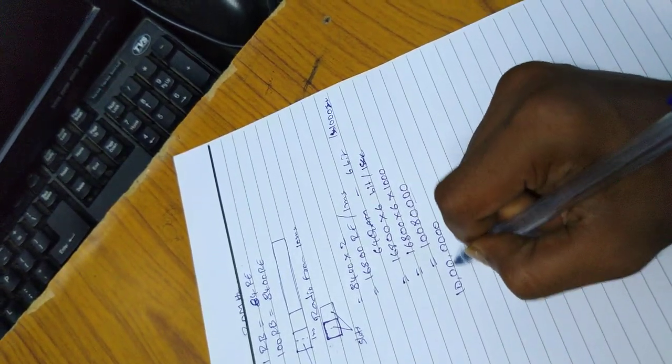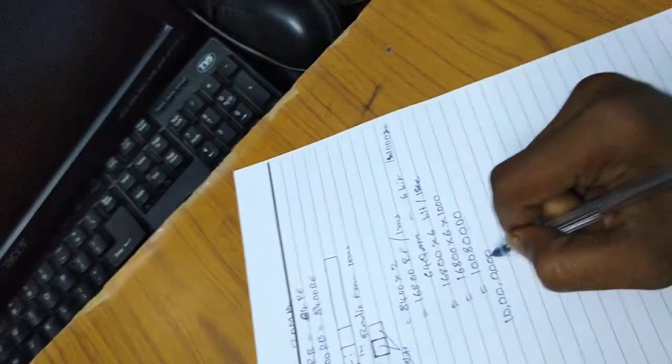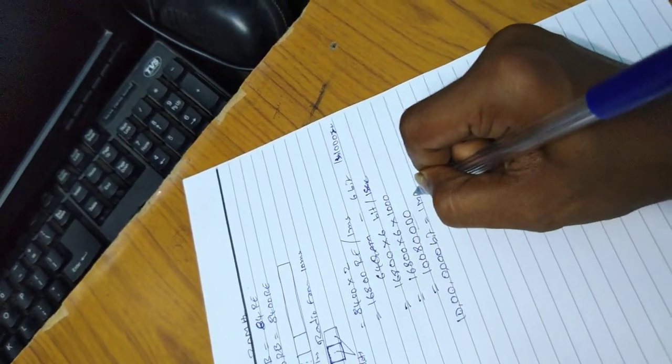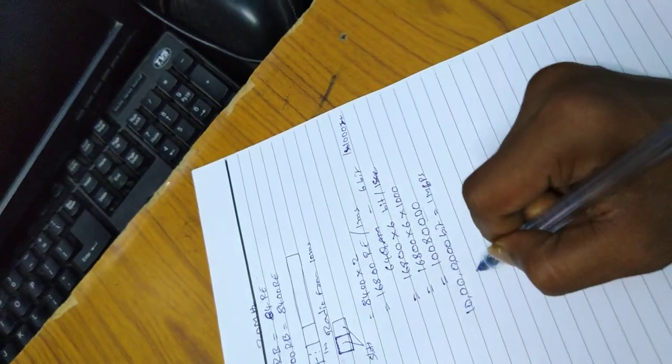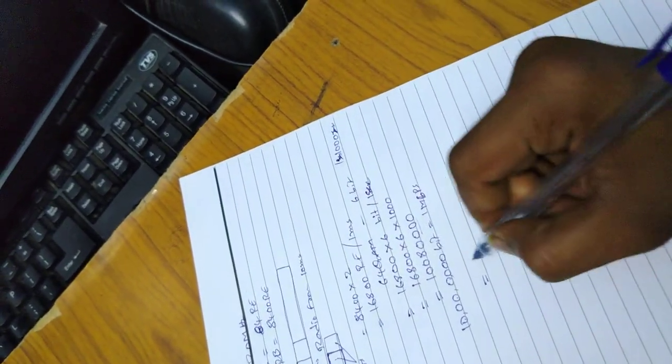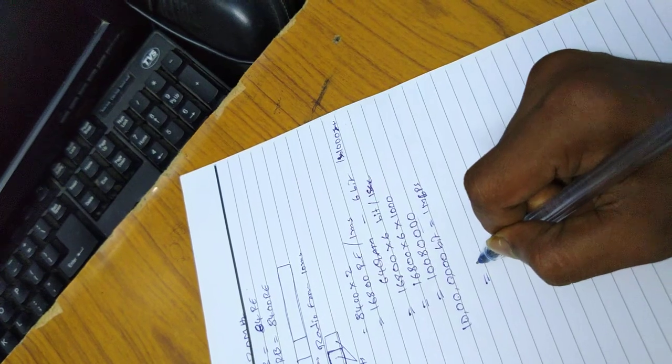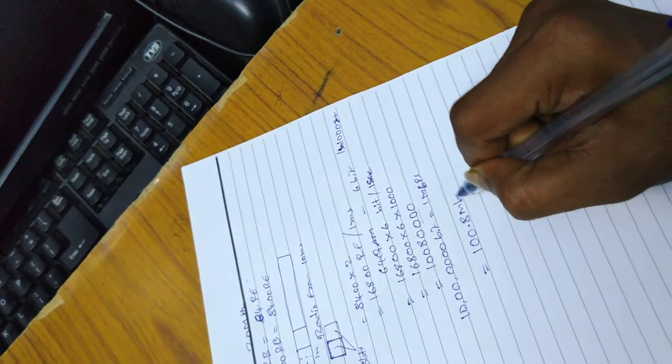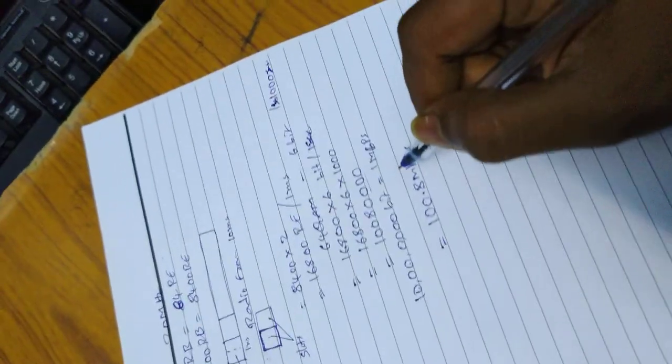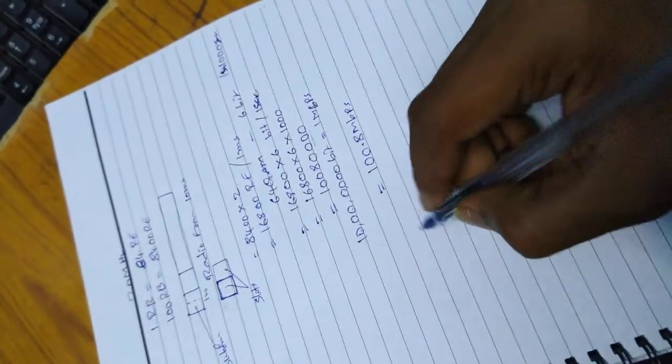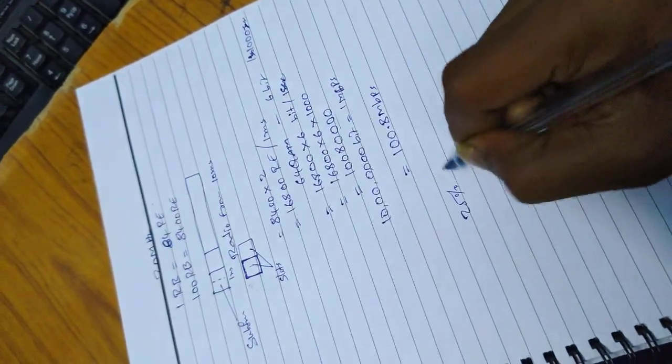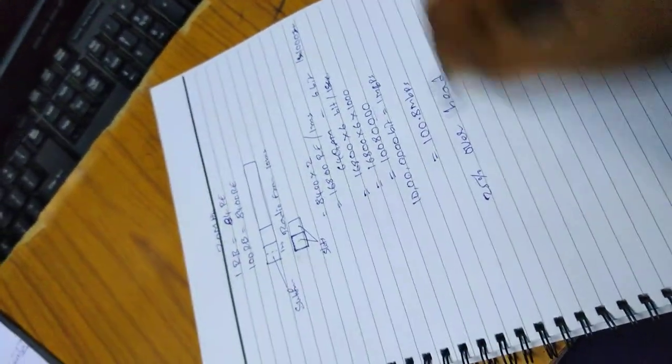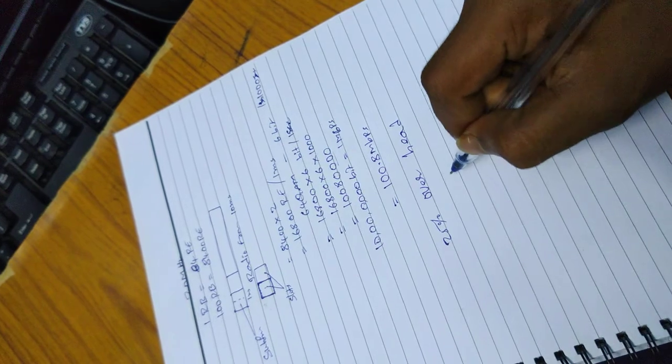Now 10 lakh bits equals 1 Mbps. Dividing, we get 100.8 Mbps. But we have 25% overhead. After removing the overhead, we get 75 Mbps for 20 megahertz bandwidth.